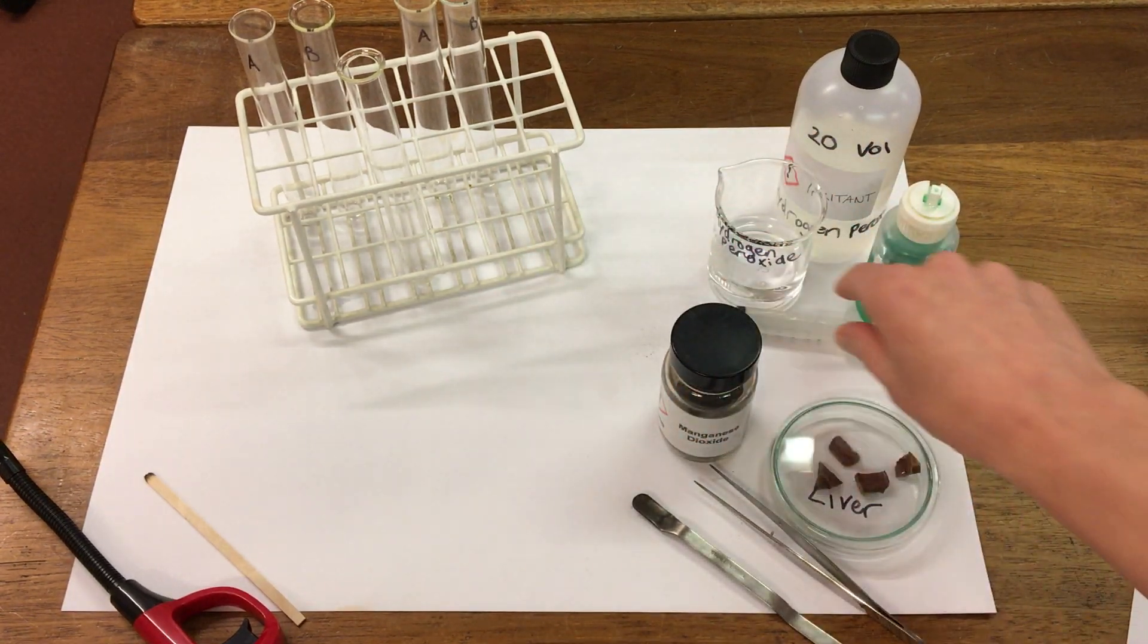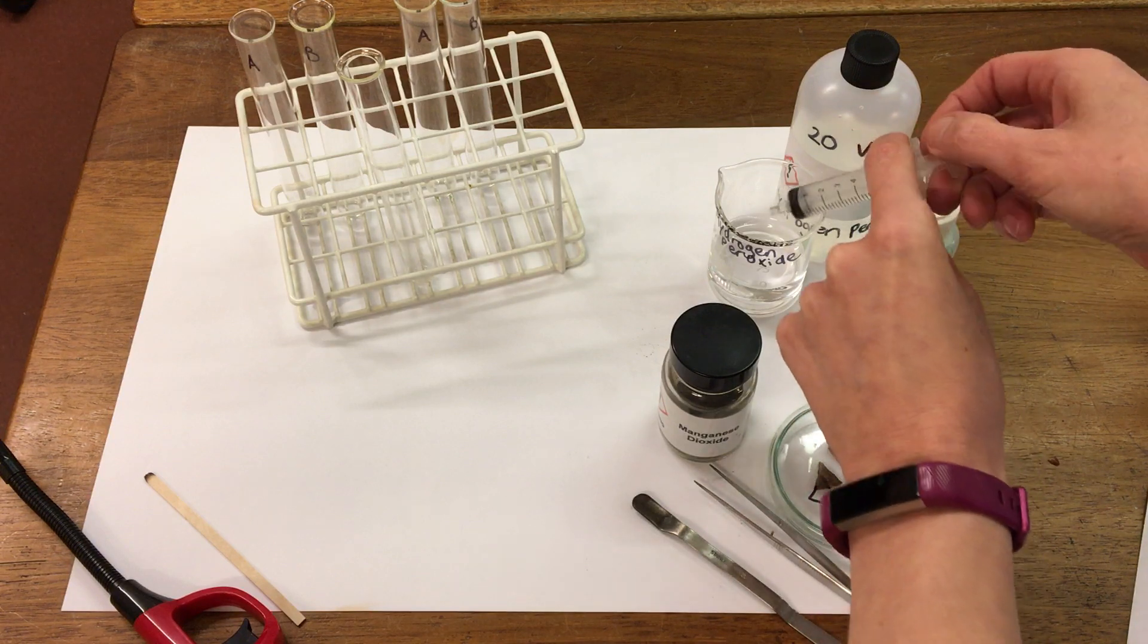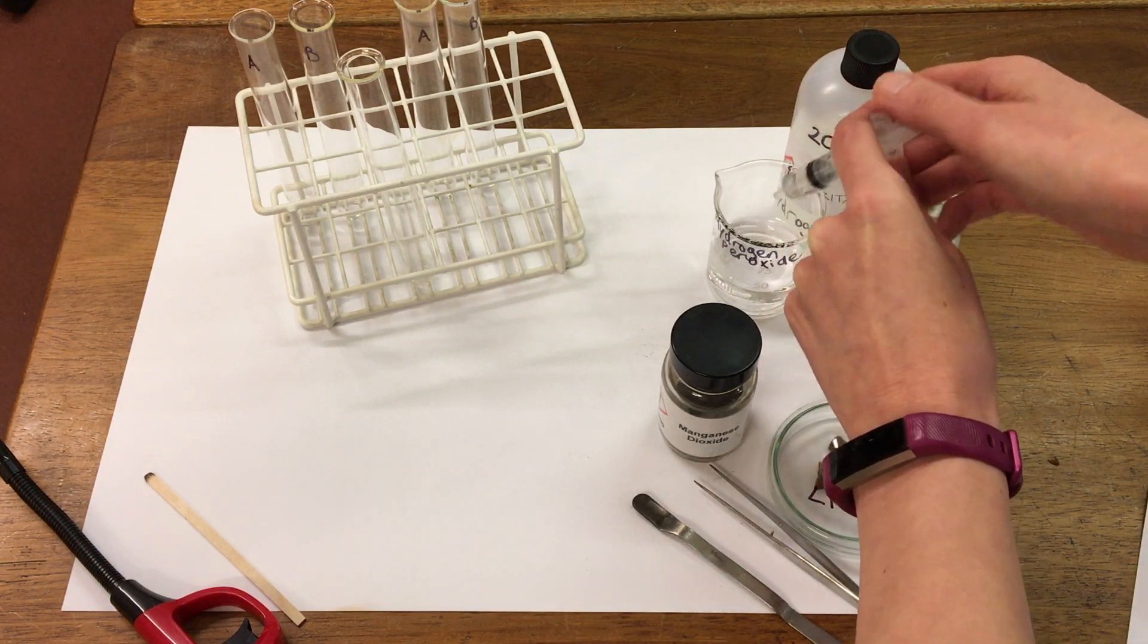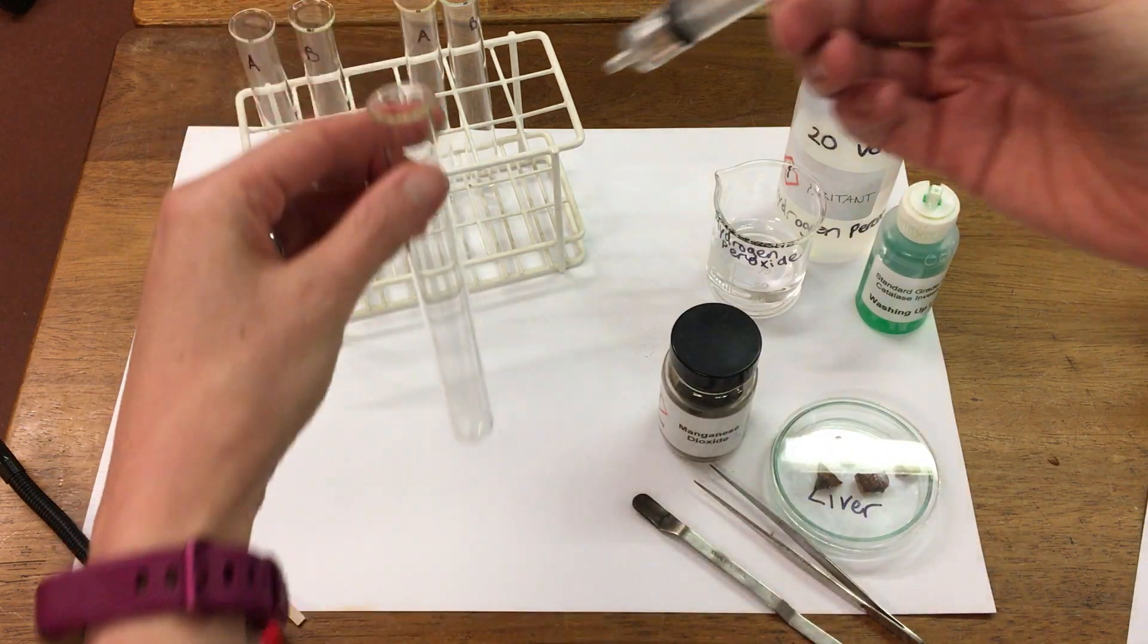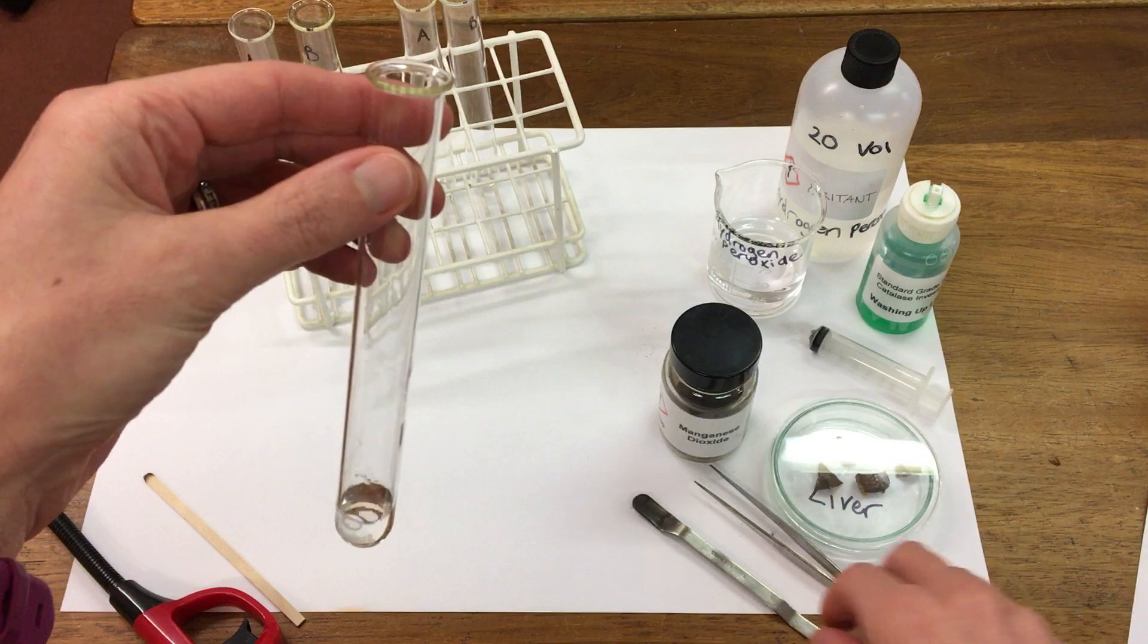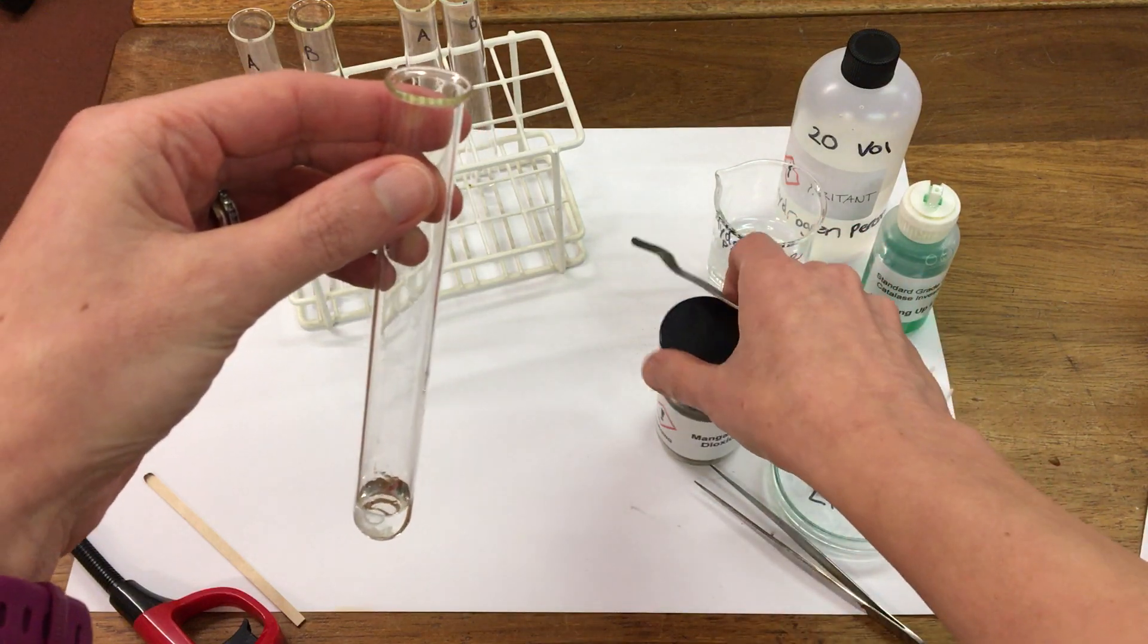So first of all I'm going to take two mils of hydrogen peroxide and we're going to add it to a test tube. I'm then going to add a spoonful of our catalyst.